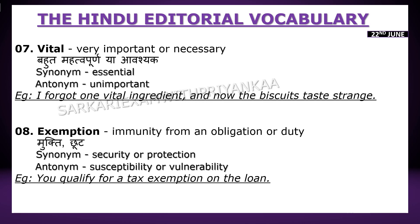The next one is 'vital'. Vital ka matlab hota hai koi bhi cheez agar bahut zyada important ya awashyak hai — usse hi vital kaha jata hai. Synonym: essential. Antonym: unimportant. Example: 'I forgot one vital ingredient and now the biscuit tastes ruined.'